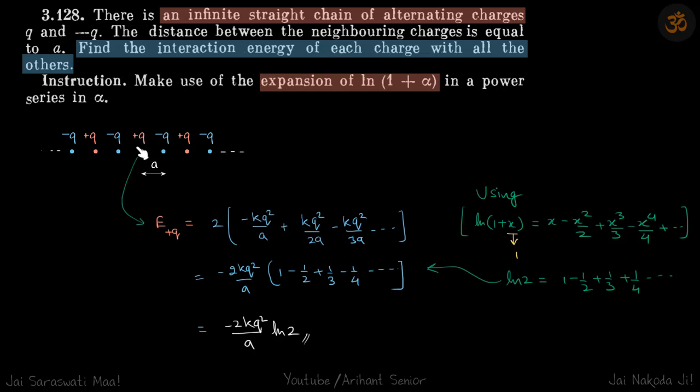If we just take one charge, since all of them are point charges, we need to calculate for each of these pairs on both sides. It's going to be a finite value because at infinity the interaction energy of this point with the point at infinity is going to be zero.